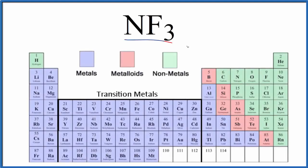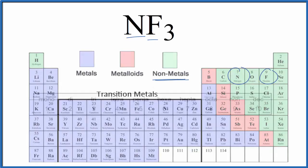Let's write the name for NF3. The first thing we need to recognize is that nitrogen is a non-metal, and fluorine is also a non-metal. So when we have two non-metals, we have a molecular compound, and we're going to need to use prefixes to write the name.